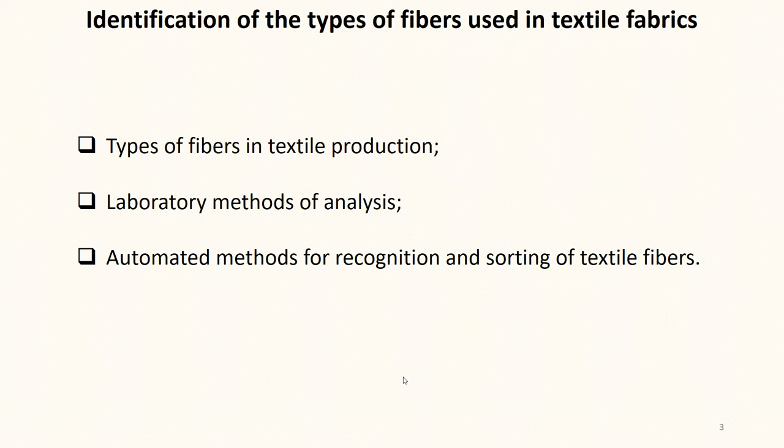The identification of the types of fibers used in textile fabrics is important when sorting them for recycling. The fibers used in textile production can be both from natural sources and artificially created, as well as a combination of them. It is possible to sort the textile materials manually, depending on the fibers used. In this case, label data is used. In some cases, the label may be missing or may not contain information on the textile fibers used.